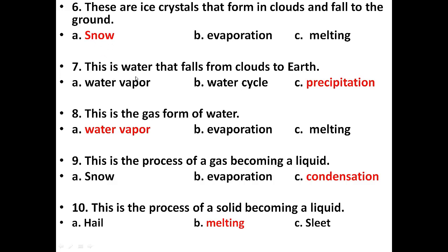Next: This is water that falls from clouds to earth. Options are water vapor, water cycle, precipitation. Again the answer is precipitation. Precipitation is the process where water falls from clouds back onto the earth. Answer is C, precipitation.